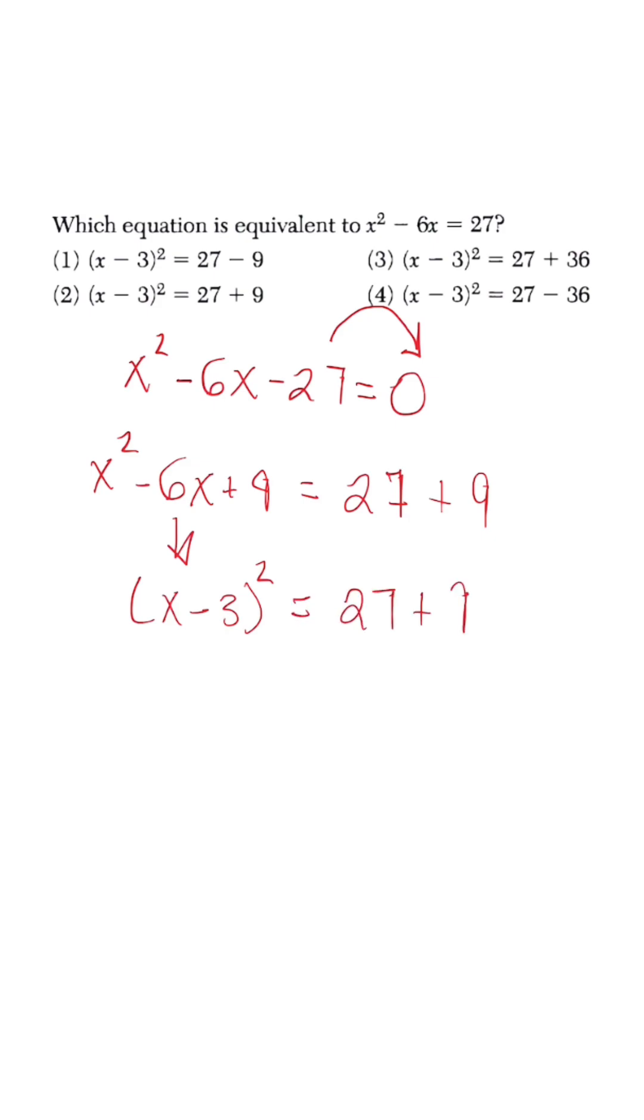So we know x minus 3 squared is what gives us that trinomial, and we bring down 27 plus 9. With this we know that the correct answer choice is going to be answer choice number 2.